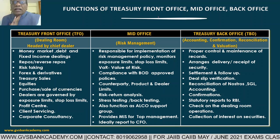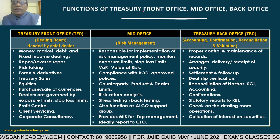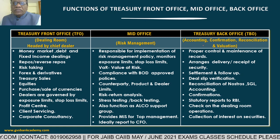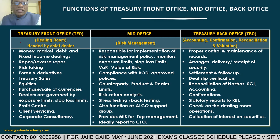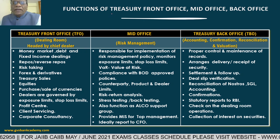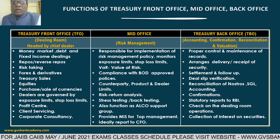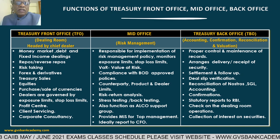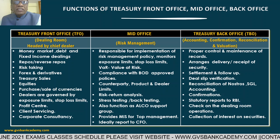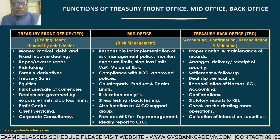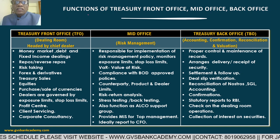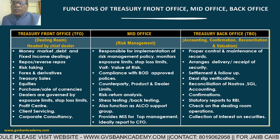As per RBI guidelines, all bank treasuries are divided into three functional parts: front office, mid office, and back office. This segregation is required to prevent overlapping of functions. Treasury is a centralized functioning branch - unlike branch banking which is distributed across India, the treasury department is situated only at the head office. Since treasury deals with at least 20 to 25 percent of the bank's assets, functional segregation and clear-cut demarcation of responsibilities between front office, back office, and mid office is very important.